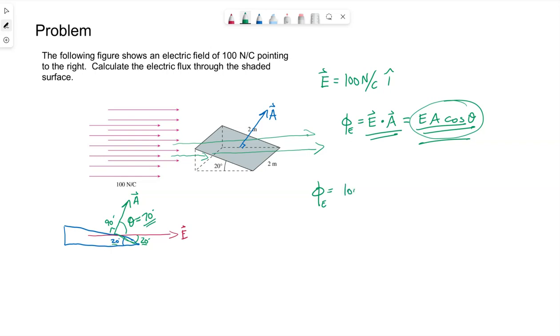So our electric field is 100 newtons per coulomb. The area, we're shown that the two sides are two meters, so those would be two squared. And then cosine of 70 degrees gives us these components that lie along the same line.